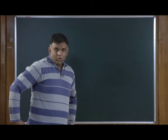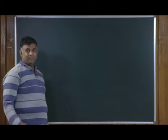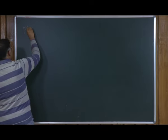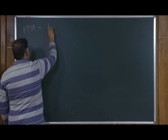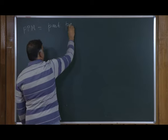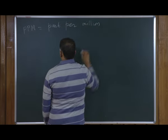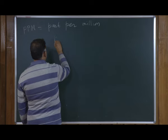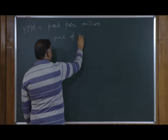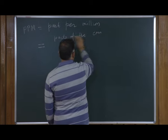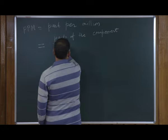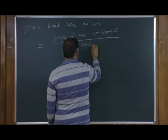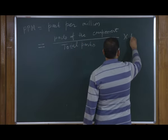In case some component is present in trace quantity — a very minute amount — there is a convenient unit called PPM. The full form of PPM is parts per million. The definition is: parts of the component divided by total parts, multiplied by 10 to the power 6 to convert to per million.